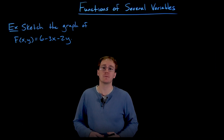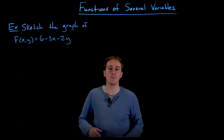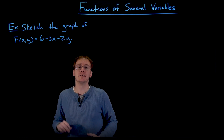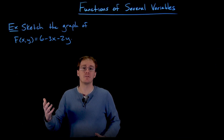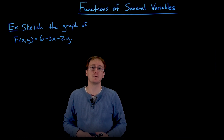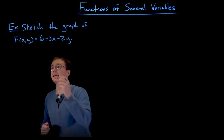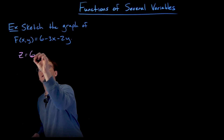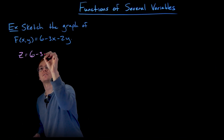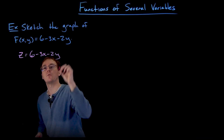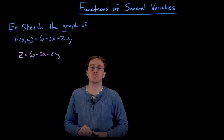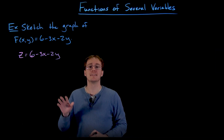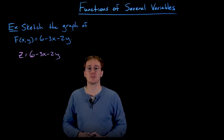One thing we might do for an example like this is remember that the notation f(x,y) is really a placeholder for our output value, which we might think of as z. So we can rewrite this equation as z is equal to 6 minus 3x minus 2y, and with that we can recognize that we're actually familiar with this type of function — this is representing a plane in three-dimensional space.